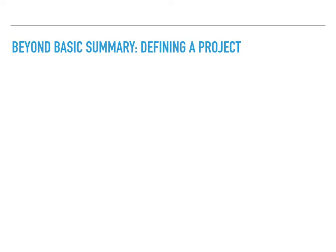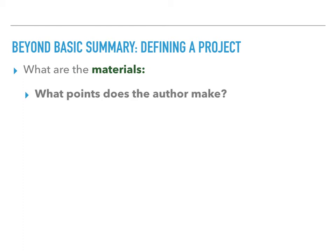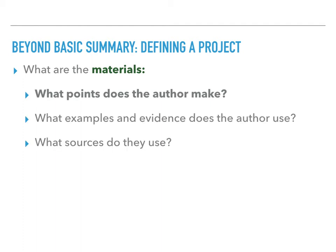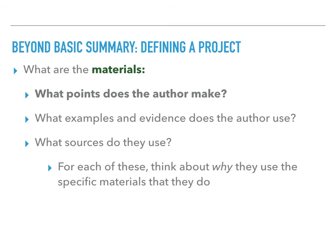On to the second major question when it comes to coming to terms: what are the materials that the author uses? At the most basic level, you might just ask what points do they make in order to achieve their aim. Then you could go deeper and ask about their evidence, examples, and the sources that they use. It's often easy to just catalog the specific materials a writer uses and make a list of them. But the real trick in coming to terms with an author's materials is not just to identify them, but to think about why they are using them. It's not enough to say that they quoted from a particular source — you need to think through why that source and that quotation were useful to your author.